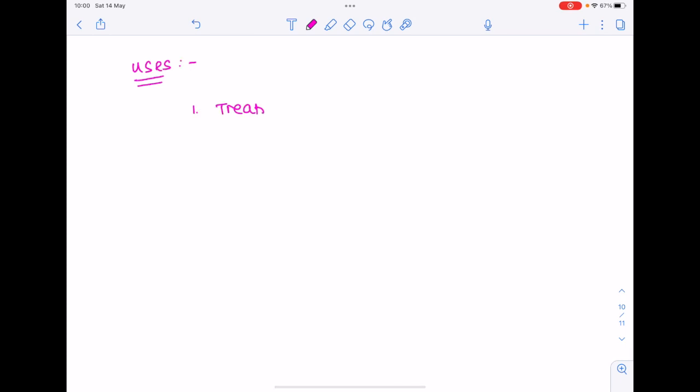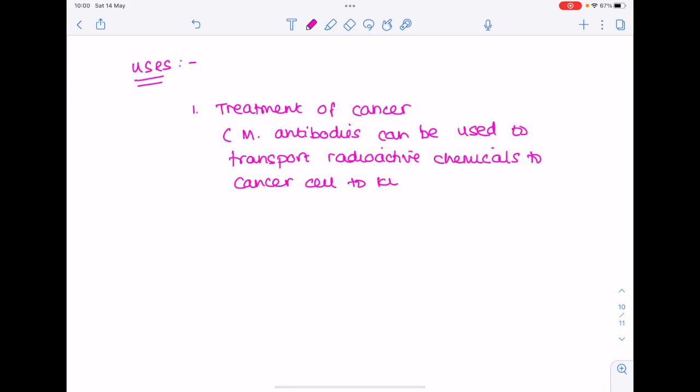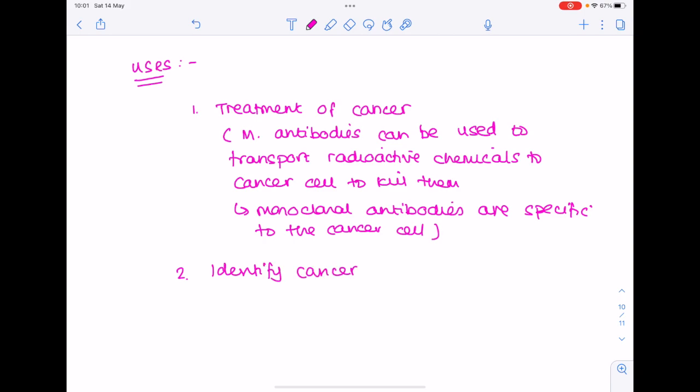So what are the uses of these monoclonal antibodies? Well, treatment of cancer. Why? Because the monoclonal antibodies can be used to transport radioactive chemicals to the cancer cell to kill them. Why can they do that? Because the monoclonal antibodies are specific to the cancer cell. They can be used to identify cancer as well as other specific molecules.